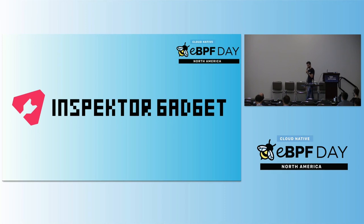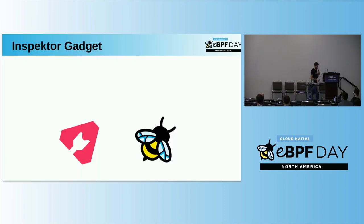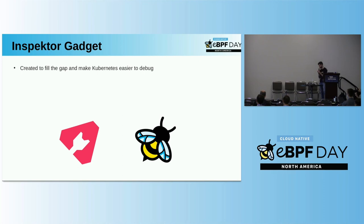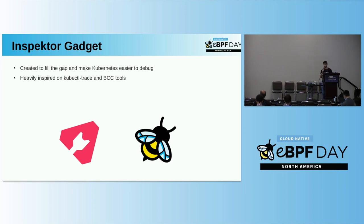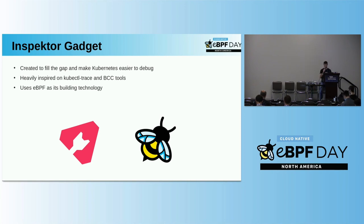Let me introduce the Inspector Gadget project. The idea is to fill the gap in those traditional tools — they are great and very powerful, but not a good fit for Kubernetes. Inspector Gadget is trying to close that gap by making those tools easier to use in Kubernetes. It is heavily inspired by kubectl trace and reuses many tools from the BCC project. Of course, we use eBPF as our underlying technology — we inject eBPF programs into the kernel. And we are Kubernetes-aware.